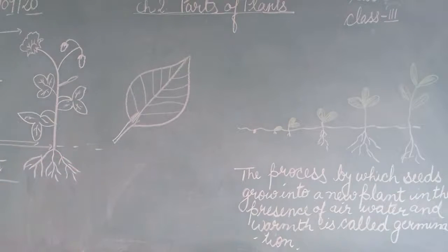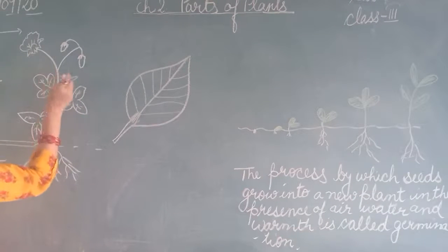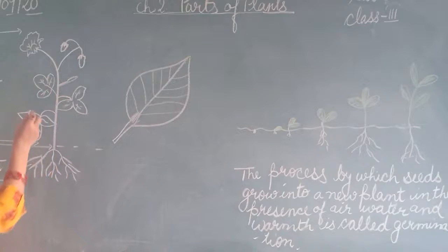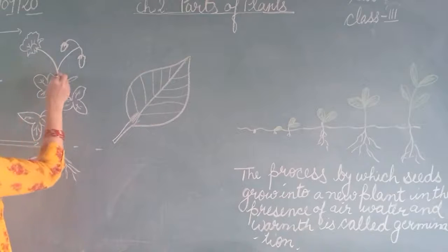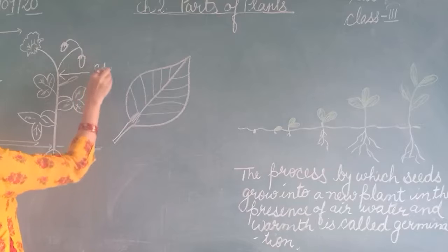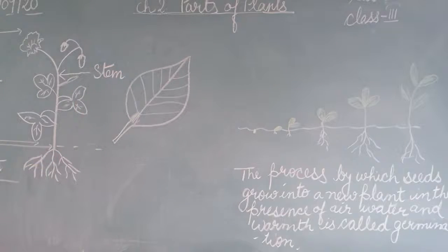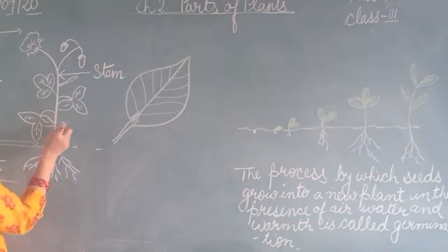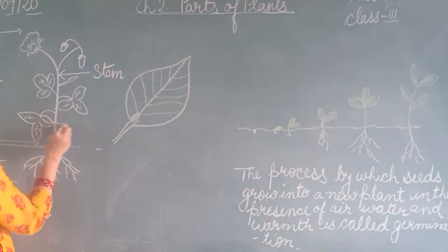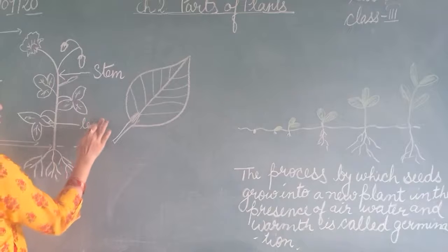In the shoot part you can see many things attached to it. The main part of the shoot is the stem. In the stem you can see leaves are attached. This is leaves.